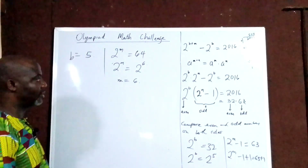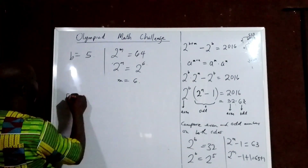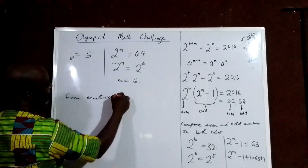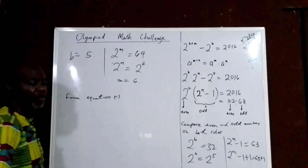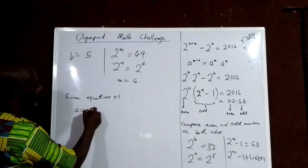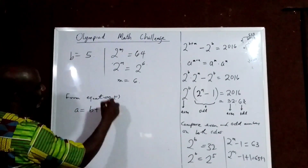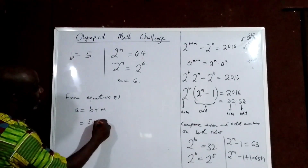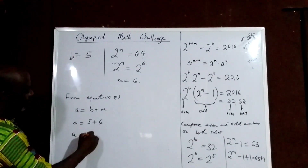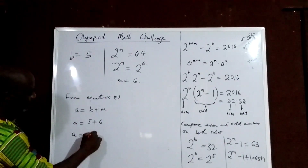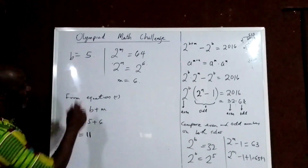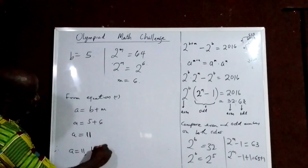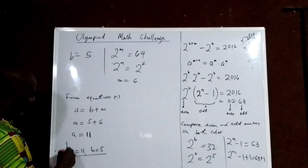But you should know that from Equation 2, we said A equals B plus M. So if B is 5 and M is 6, that means A equals 11. Therefore, for that equation, A equals 11 and B equals 5. This is our solution.